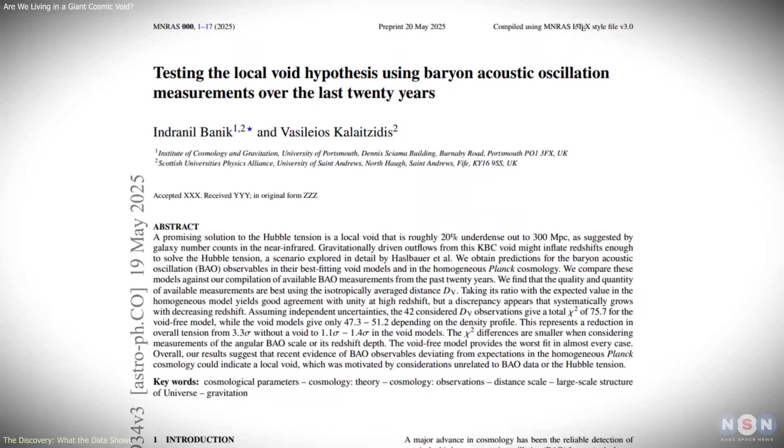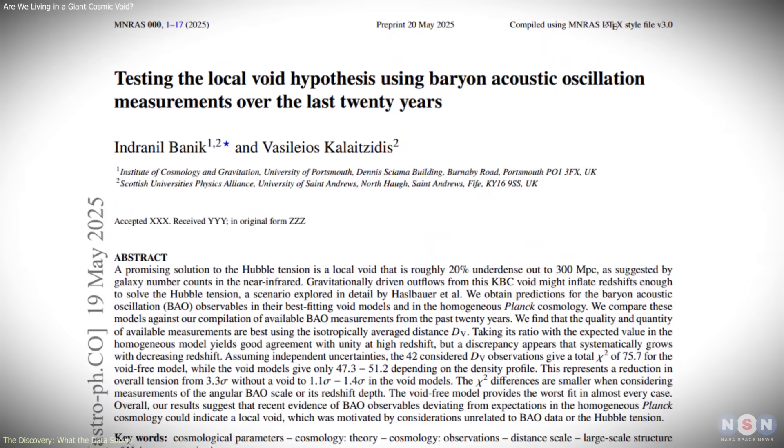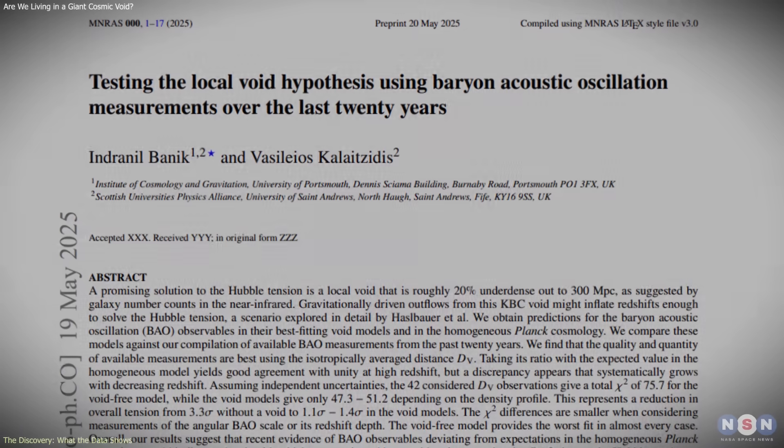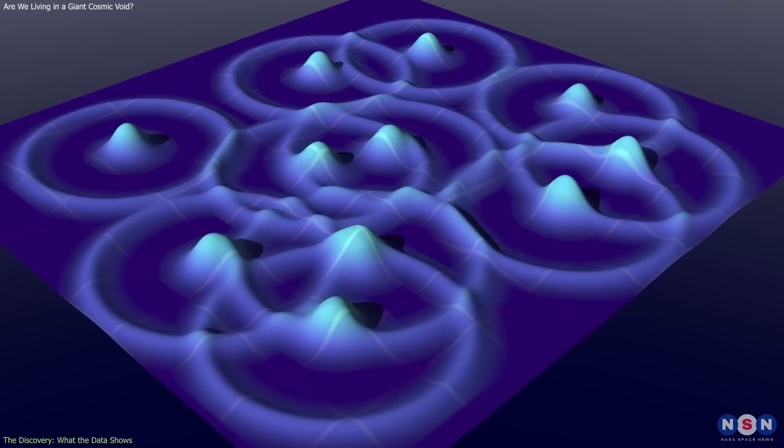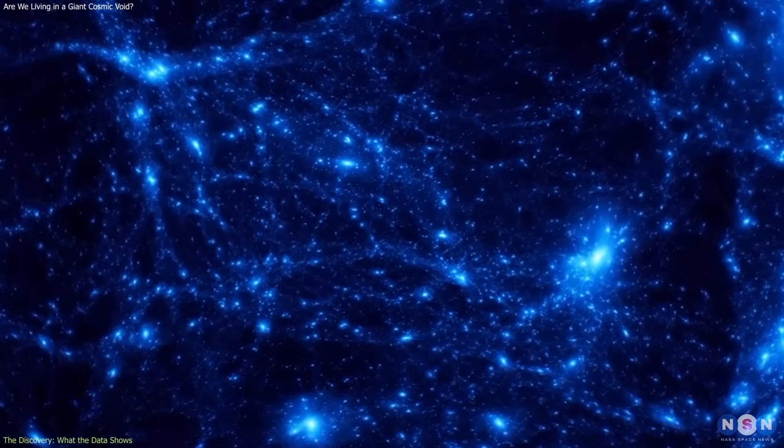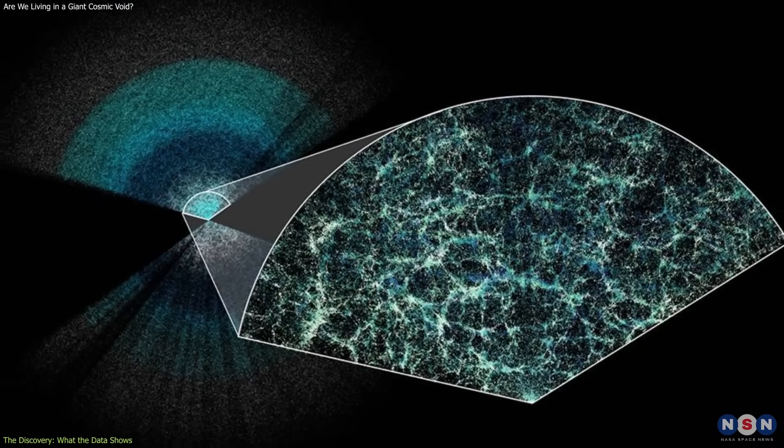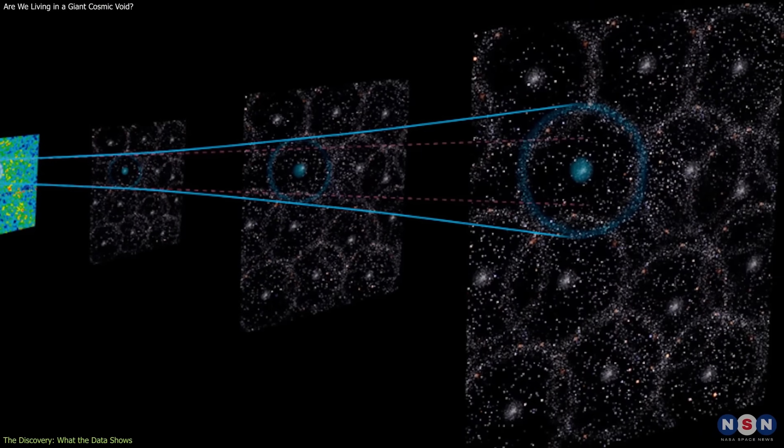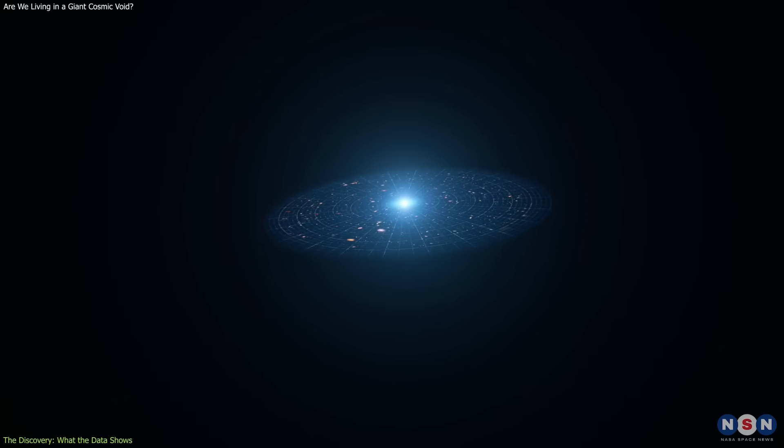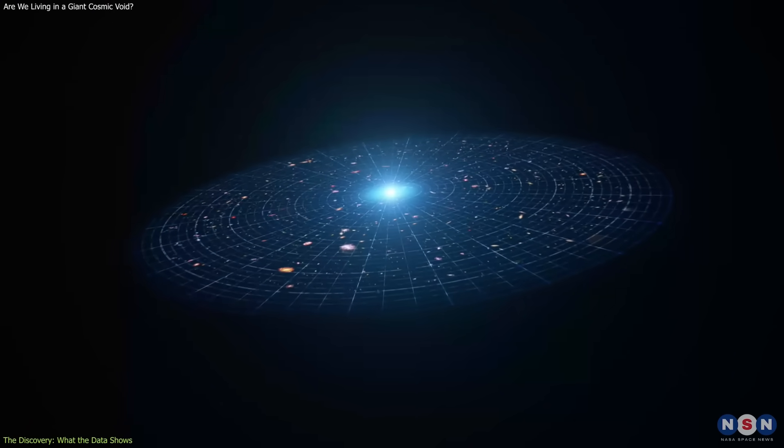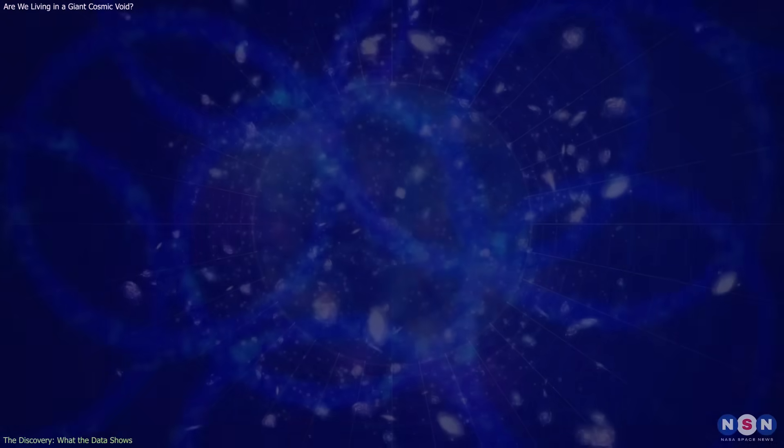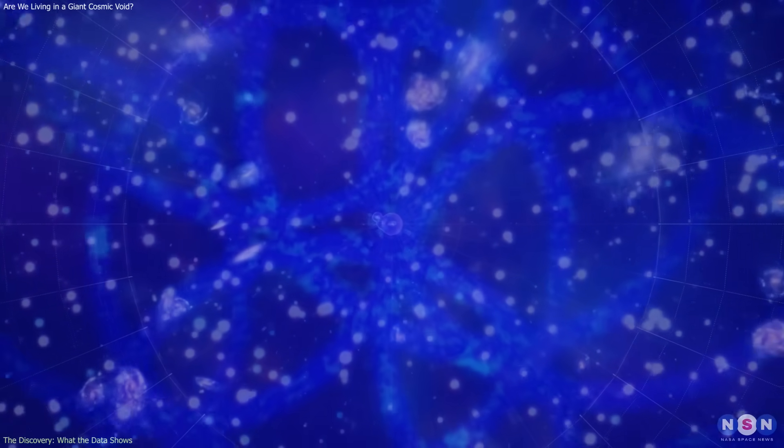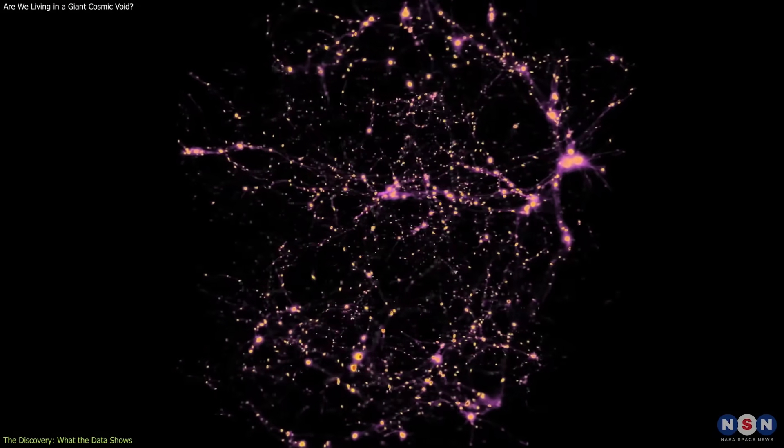The research at the center of this discussion relies on baryon acoustic oscillations, often called BAOs. These are faint but measurable patterns in the large-scale distribution of galaxies, created by pressure waves that traveled through the early universe when matter and radiation were still tightly linked. Those waves left behind a characteristic physical scale. Because that scale is well understood, astronomers use it as a standard ruler to study cosmic expansion, by measuring how large this ruler appears on the sky at different redshifts.